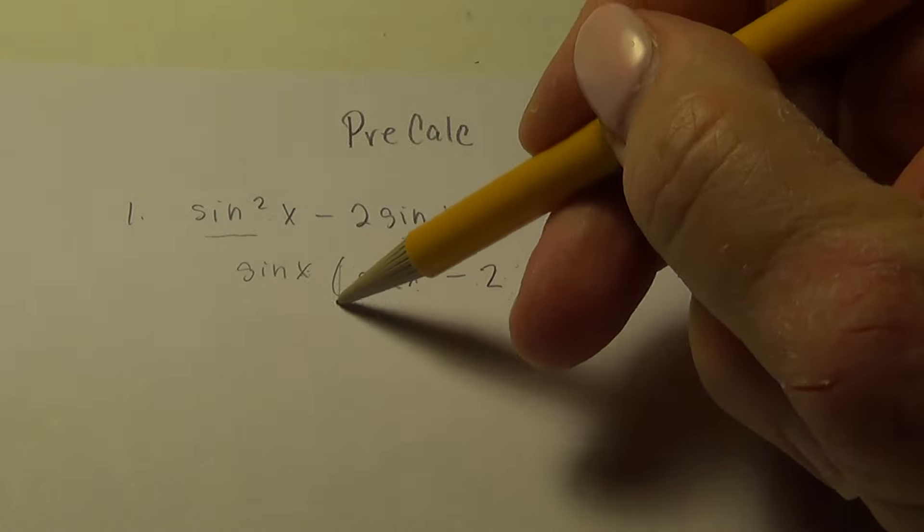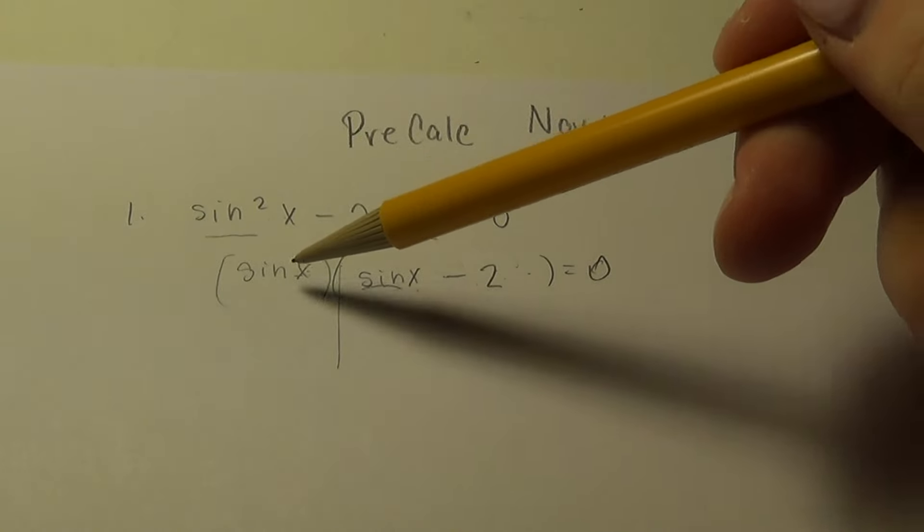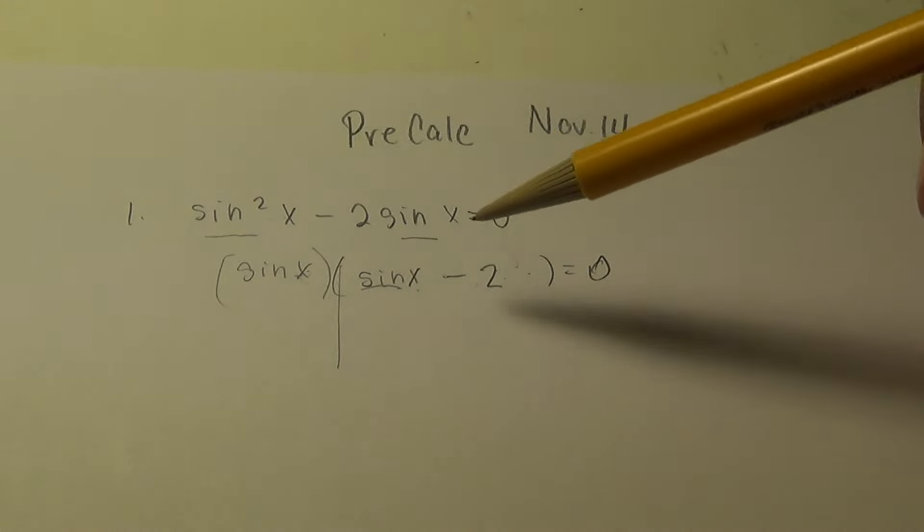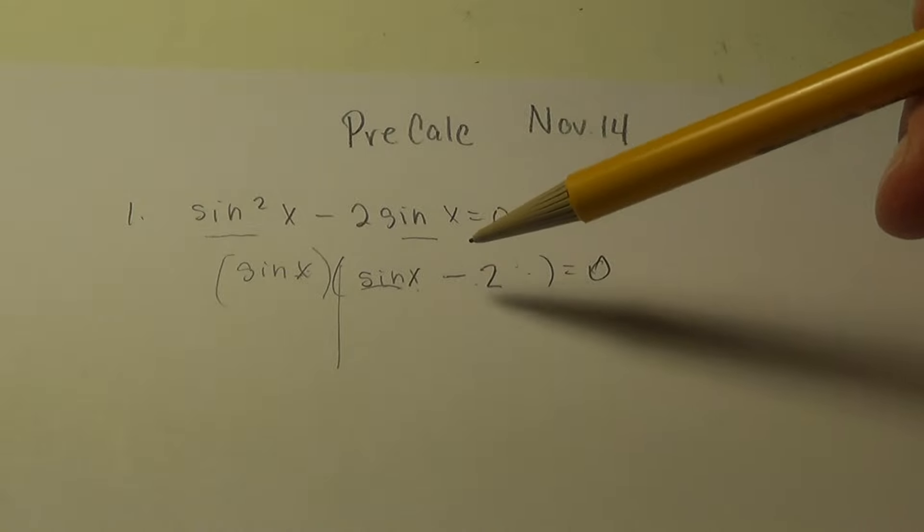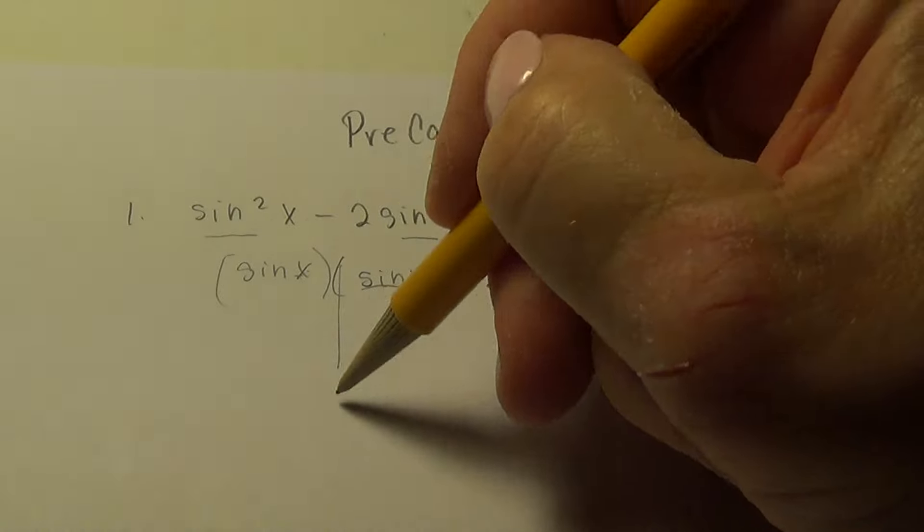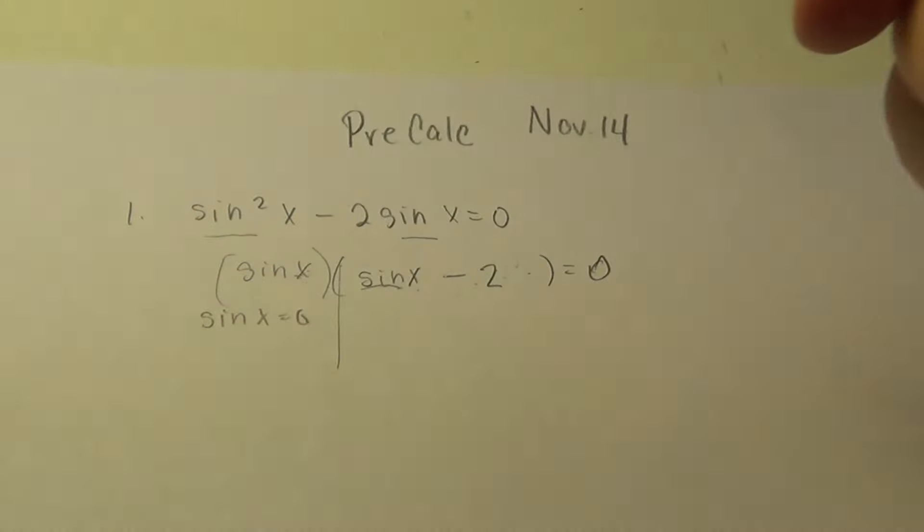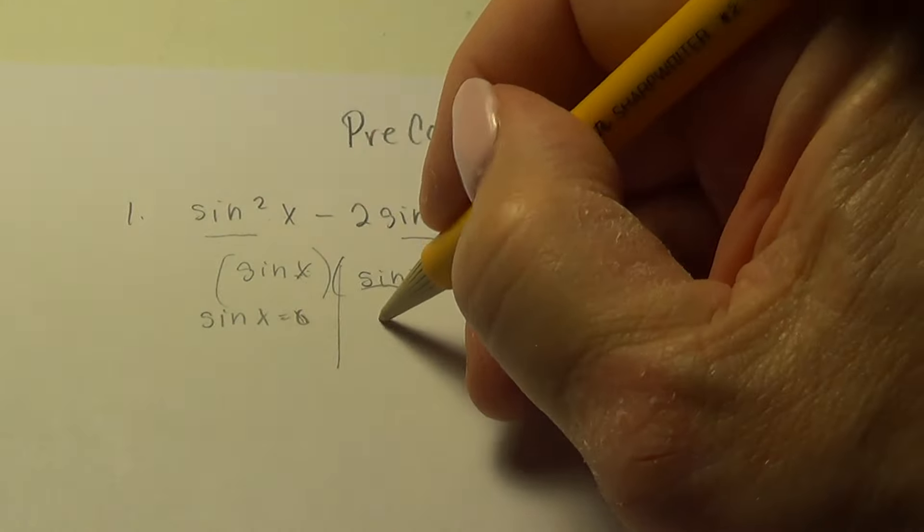Alright, why do we factor? Because when you have two things multiplied together, either the first one, or the second one, or both equal 0. So I'm going to go down each branch, set this one equal to 0, and set this one equal to 0.